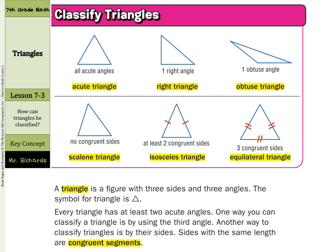Now when it comes time to classify triangles we can do so by their angles and we can do so by their sides. An acute triangle has all acute angles, all less than 90 degrees. A right triangle has one right angle. An obtuse triangle has one obtuse angle. Now we can also classify triangles by their sides. A scalene triangle has no congruent sides whereas an isosceles triangle has at least two congruent sides and an equilateral triangle has three congruent sides. All the sides are equal. Now a triangle is a figure with three sides and three angles. The symbol for a triangle is well that it's a triangle. Every triangle has at least two acute angles. One way you can classify a triangle is by using the third angle. Another way to classify the triangles by their sides. Sides with the same length are congruent segments.